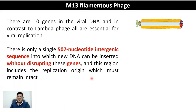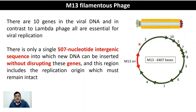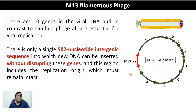Looking at the genome of M13, it is a single-stranded circular DNA with an M13 origin of replication, downstream of which are the genes numbered 2, 10, 5, 7, 9, 8, 3, 6, 1, and 4, arranged in that order. All 10 genes are essential, so the intergenic region between the origin and gene 2 is the only region where DNA of interest can be inserted. The M13 origin — or in actual vector use, the F1 origin of replication — must remain intact for viral DNA replication.